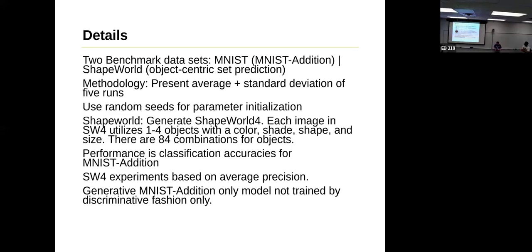These use random seeds for parameter initialization, and then after that, they went ahead and made their own ShapeWorld. So their ShapeWorld would be utilized or named ShapeWorld-4. Each one has one to four objects, so it doesn't just have to have four, can have just one of the four. Each object will have a specific color, shade, shape, and size. And between all these attributes, there's about 84 combinations that they can have.